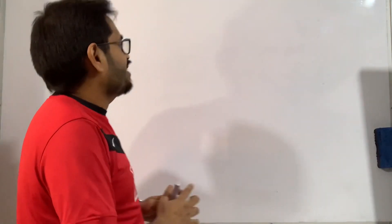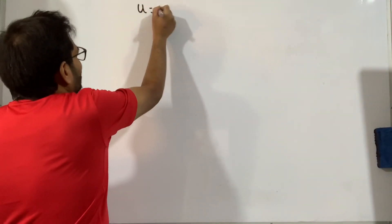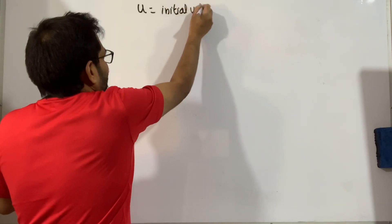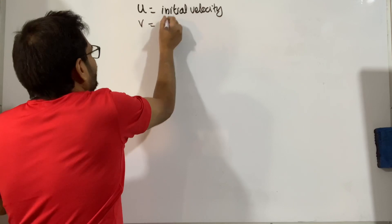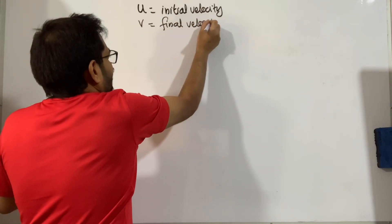Hi guys, welcome back, it's Salim with you, welcome to my channel Learning Simplified. If you are just starting your car from rest and going to drive it, your initial velocity is zero because you're starting from rest. Imagine you drive it a little distance and achieve a new velocity — we call that the final velocity. So we have two velocities: u is initial velocity and v is final velocity.